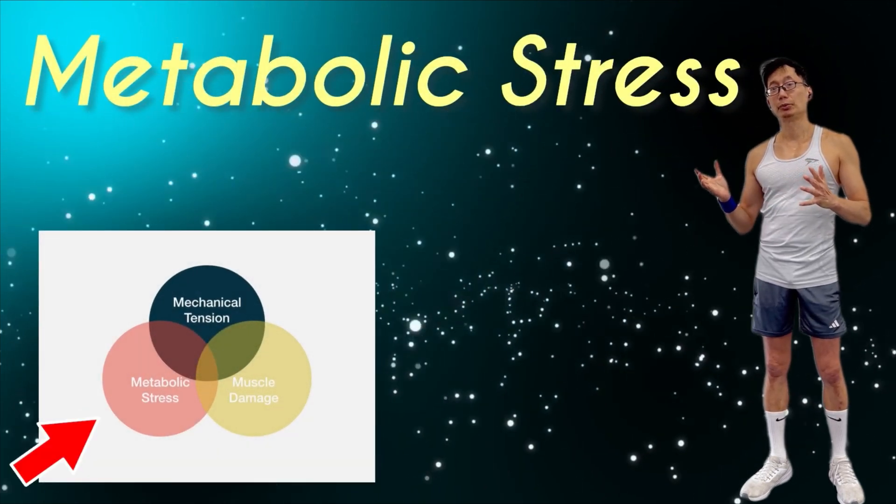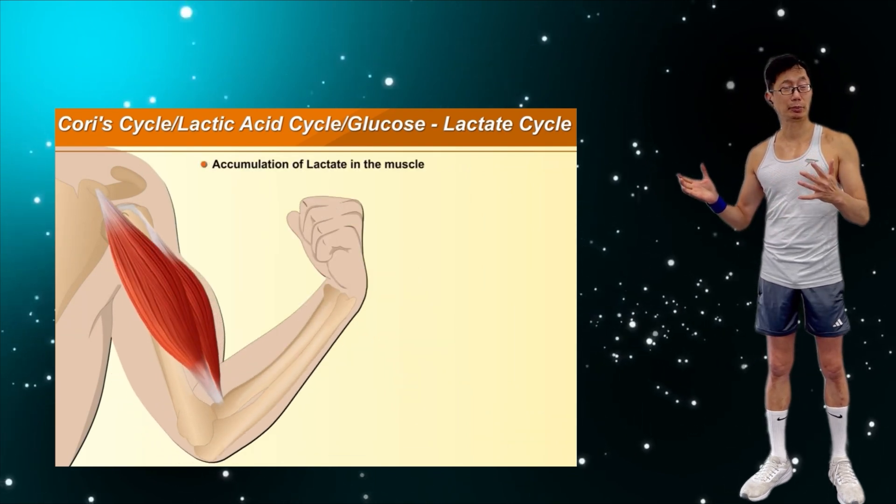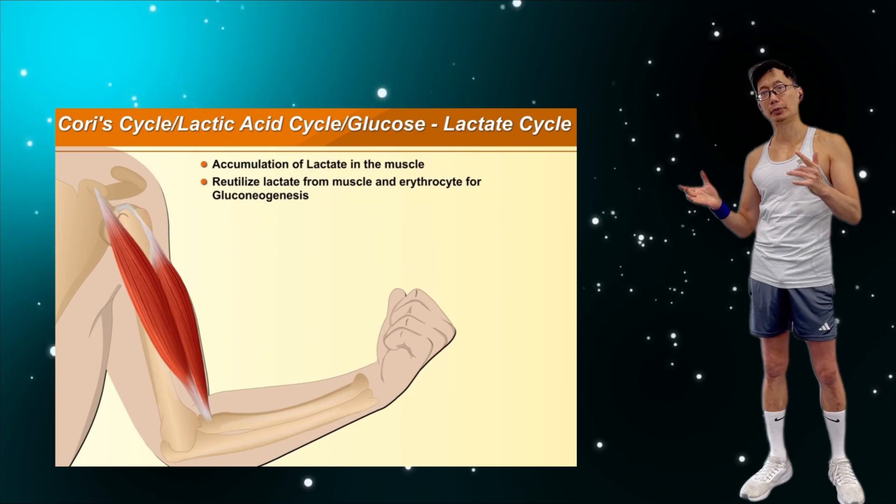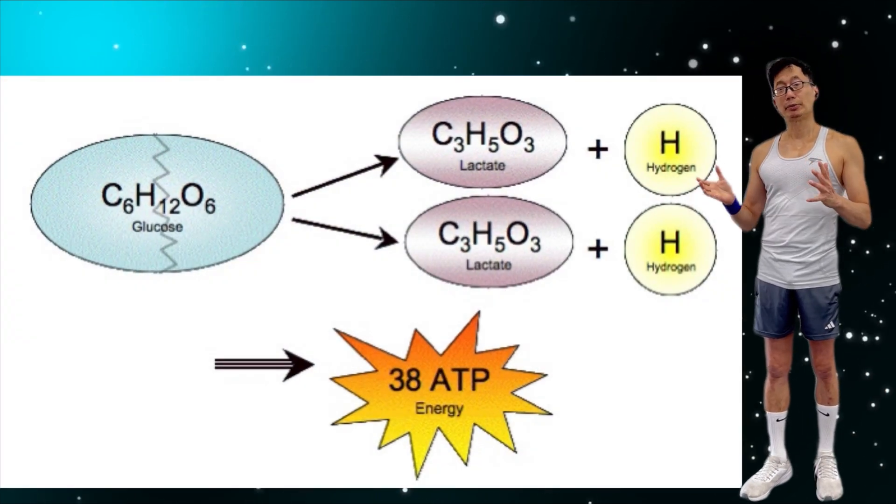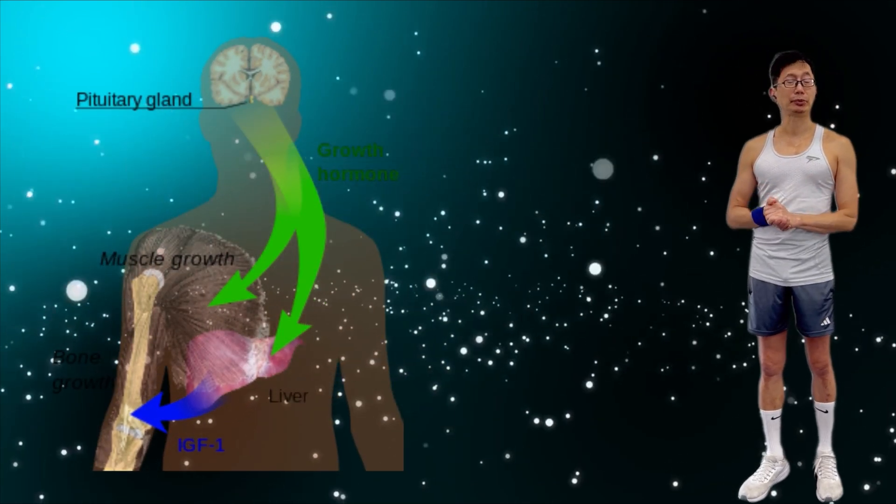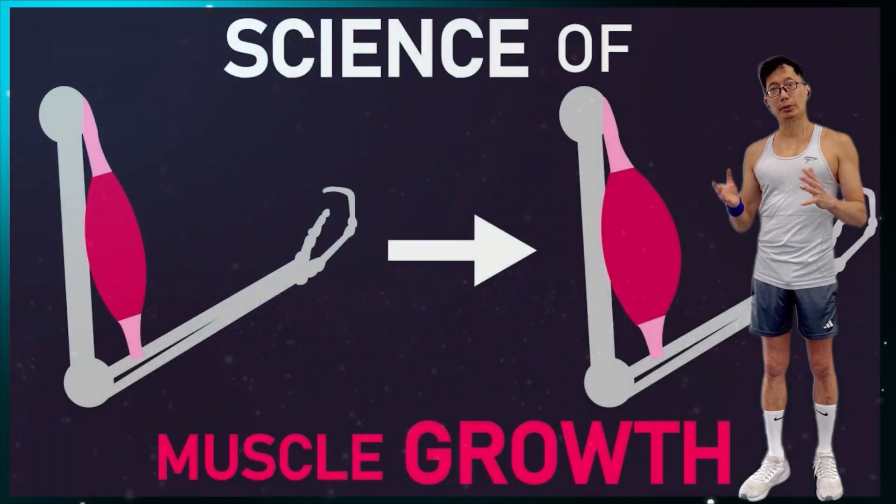The last factor for muscle growth is metabolic stress. During a strength workout, fatigue in muscles leads to a buildup of metabolites. These are the leftovers from the chemical reactions that happen when the muscles use energy, such as lactate and hydrogen ions. These metabolites cause the release of hormones and other byproducts that cause muscle to grow.